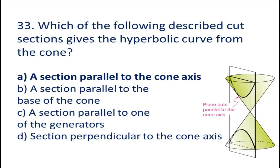Question number 32: Which of the following described curved sections gives the hyperbolic curve from a cone? A. Section parallel to the cone axis.